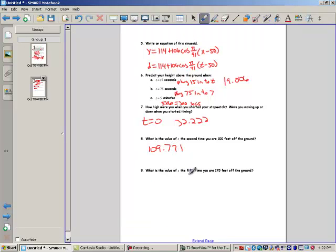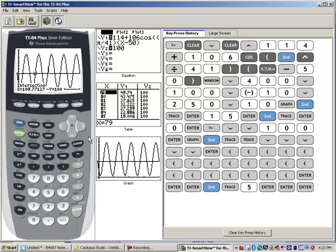What is the value of t the fifth time you're at 175 feet off the ground? Well you can graph y equals 175 and go do that one. So anyway, that's pretty much what you have to do. You're going to have to look at a word problem, write yourself an equation, and answer the questions.